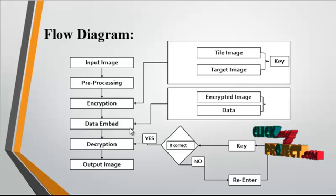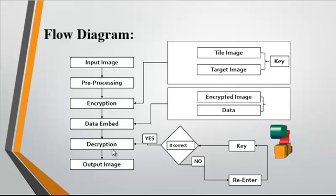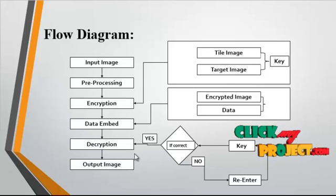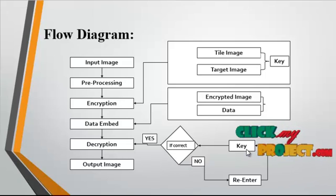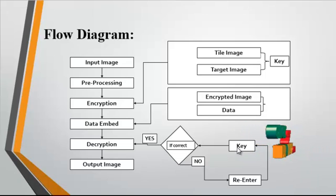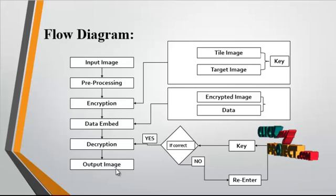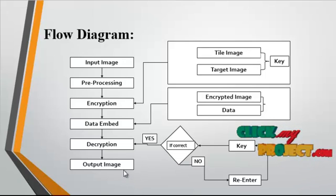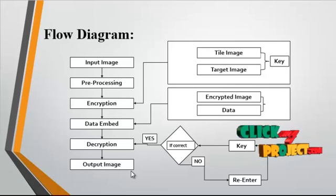Data embedding means embedding data into the encrypted image. After embedding, the encrypted image consists of two embedding images and one embedded data. The image then undergoes decryption, which is the reversible process of encryption. The user provides a key for decryption — if correct, decryption occurs; if not, the user must re-enter the key. After decryption, the decrypted image consists of the two original input images and the embedded data, all retrieved through the decryption process.